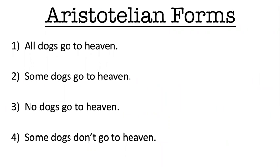There are four Aristotelian forms, and they have these structures. All dogs go to heaven, or all P's are Q. Some dogs go to heaven, no dogs go to heaven. Some dogs don't go to heaven. What I want you to do now is pause your videos, and see if you can translate each of these into FOL.